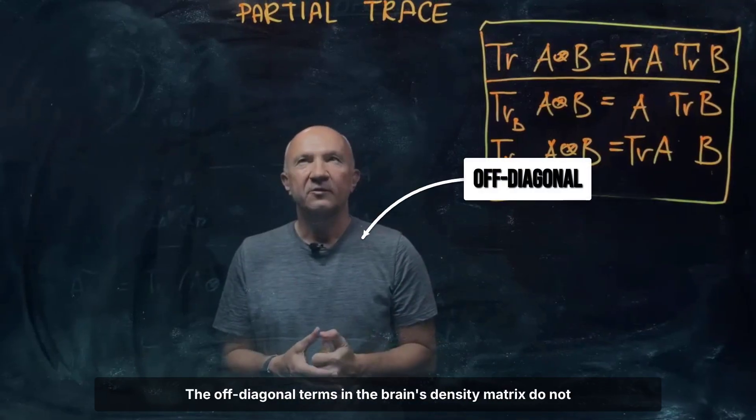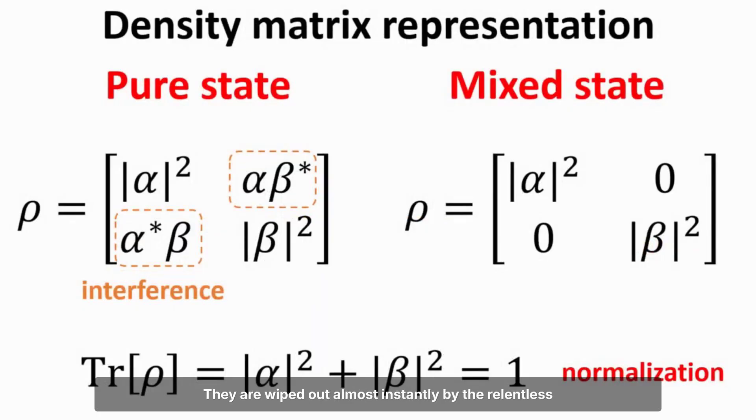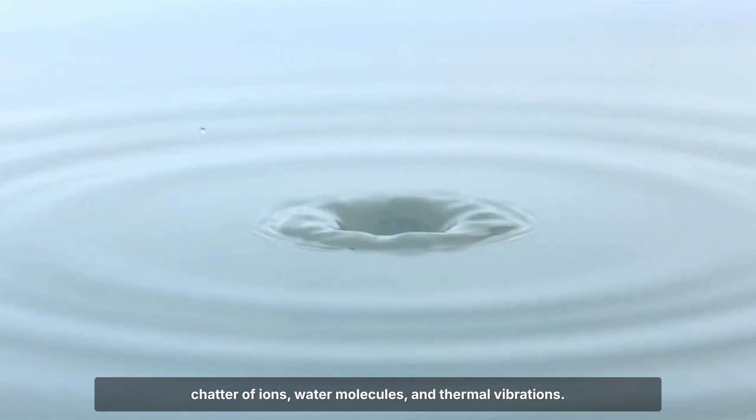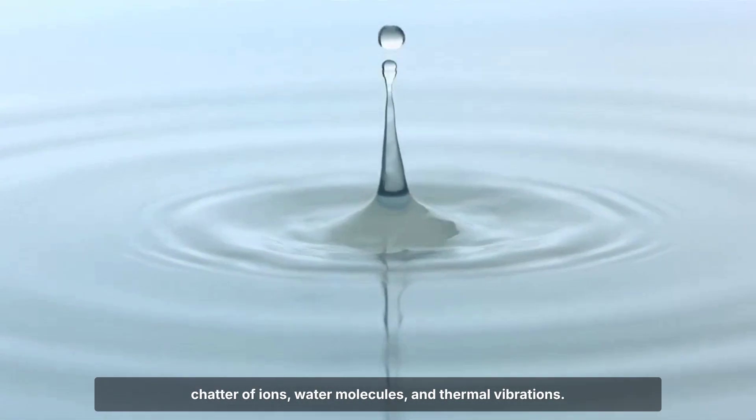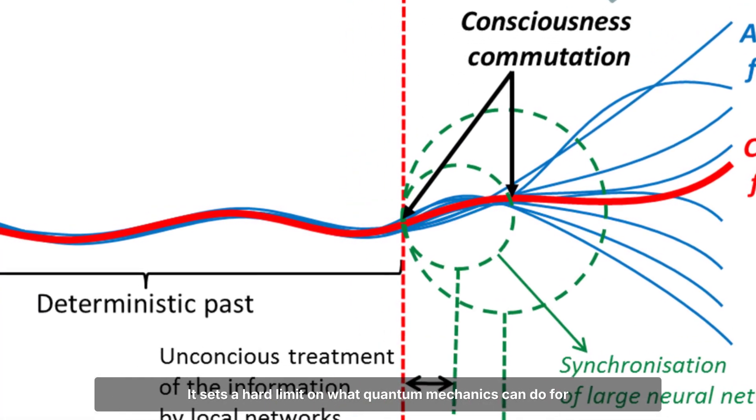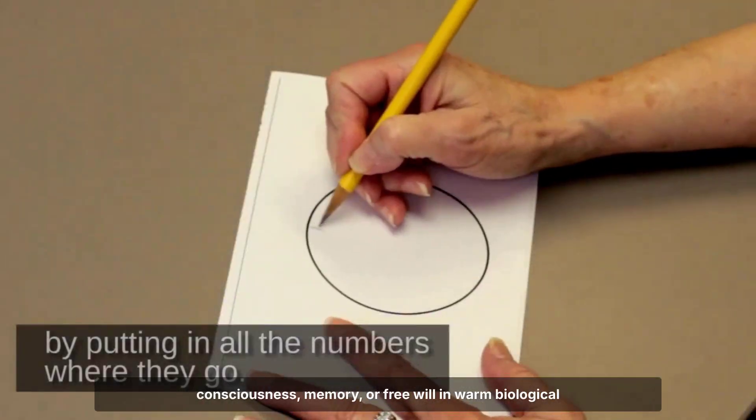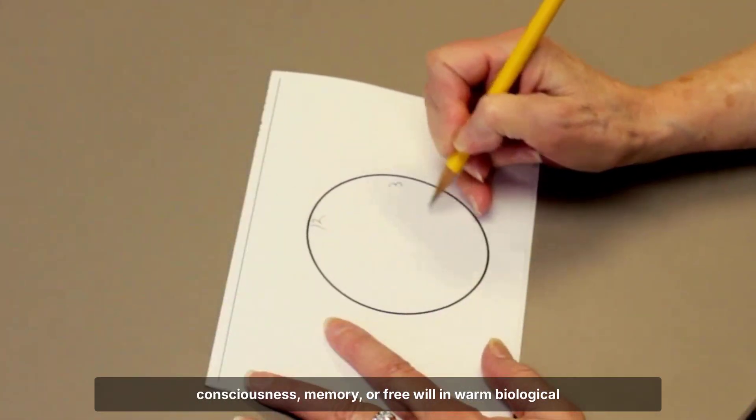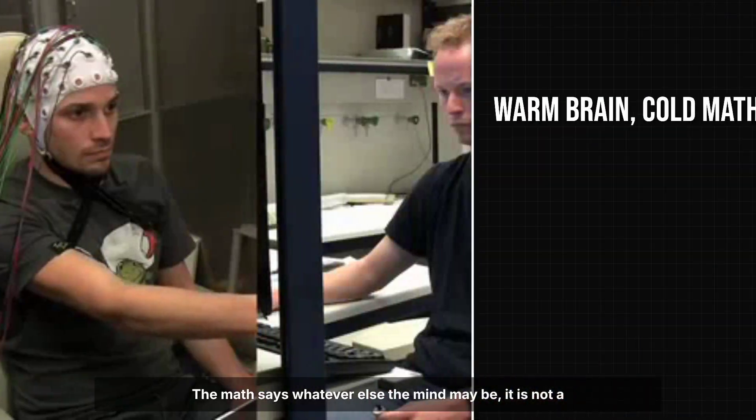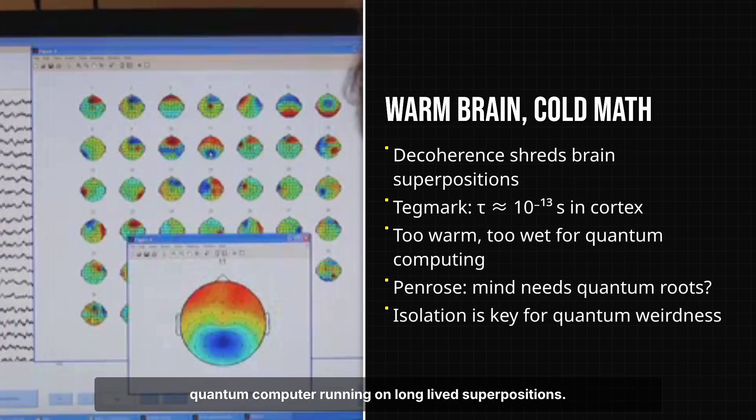Any quantum superposition in neural tissue is destroyed before a single neuron can fire. The off-diagonal terms in the brain's density matrix do not fade gently. They are wiped out almost instantly by the relentless chatter of ions, water molecules, and thermal vibrations. This number is not just a curiosity. It sets a hard limit on what quantum mechanics can do for consciousness, memory, or free will in warm biological systems.